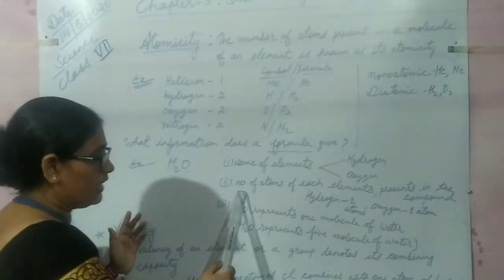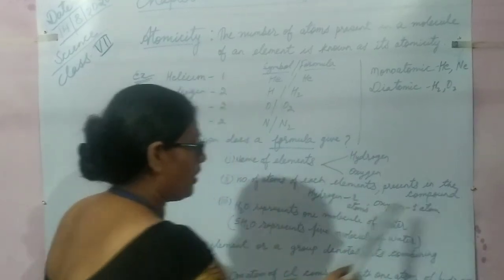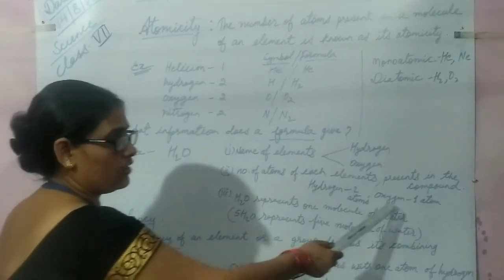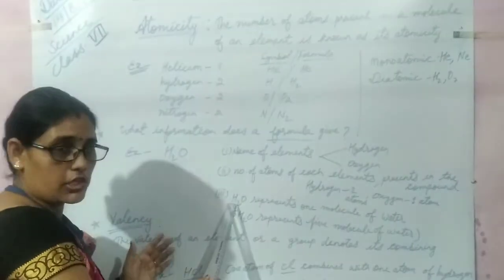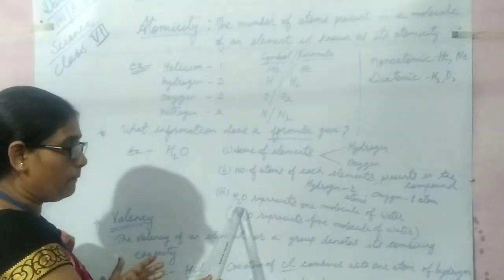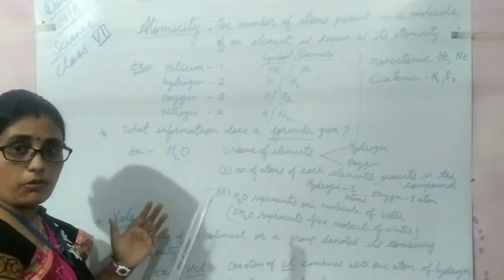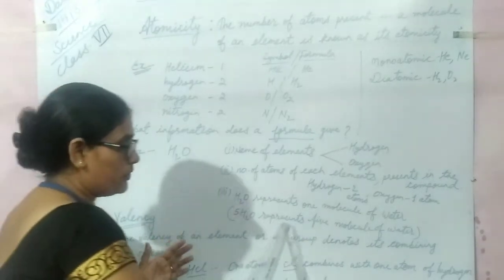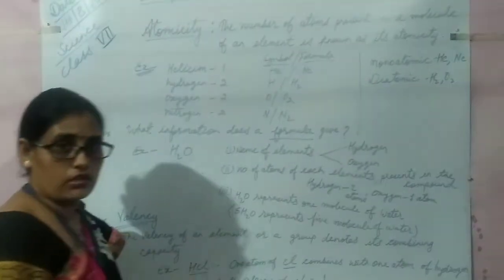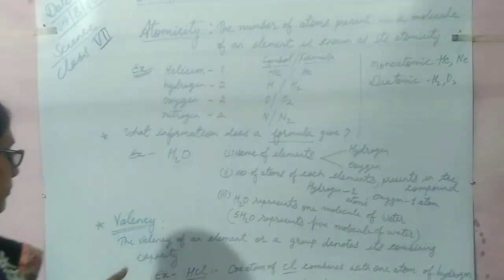Number two is very important: the number of atoms of each element present in the compound. Like hydrogen, two atoms, and oxygen equals one atom. The third information: the formula H2O represents one molecule of water. To represent five molecules of water, we write 5H2O. Similarly, 2H2O represents two molecules of water.